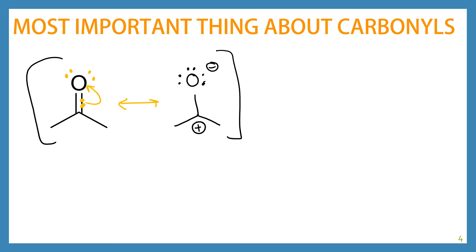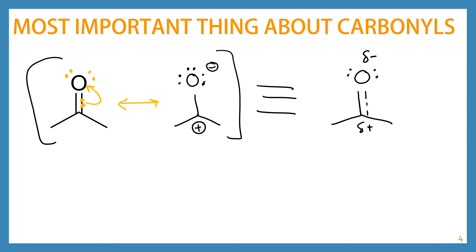Because if this is an existing resonance form, then both of these structures must be contributing to the true nature of the molecule. Another way we could draw this molecule would be to imagine kind of a half bond for that double bond, with a partial negative on the oxygen and a partial positive on the carbon. This bond is actually very real — it is actually a double bond — but this tells us that there is a dipole along this molecule where the electron density is focused on the oxygen.